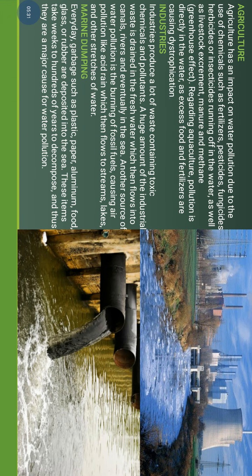The third cause of water pollution is agriculture. As you can see in this picture, agriculture, industries, and marine dumping all affect the environment. Agriculture impacts water pollution through the use of chemicals such as fertilizers, pesticides, fungicides, herbicides, and insecticides that run off into water. These also produce gases and methane that contribute to the greenhouse effect. Agricultural pollution directly affects water and food through fertilizers causing eutrophication.